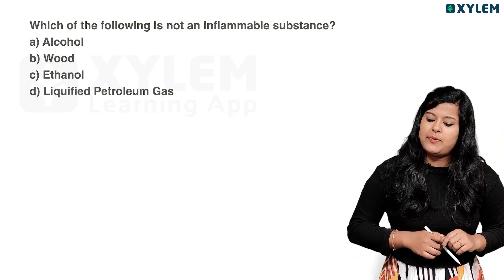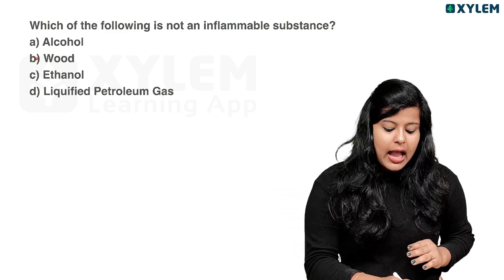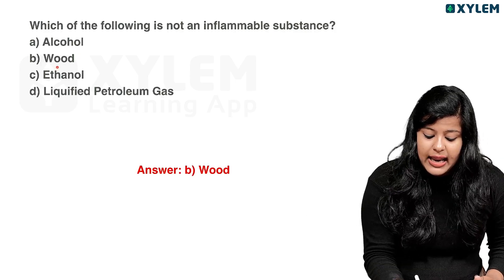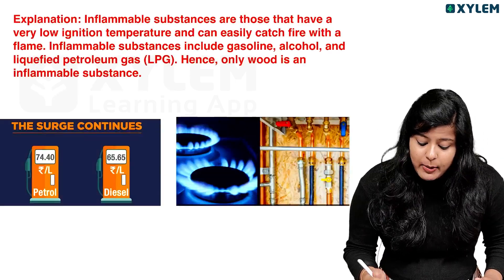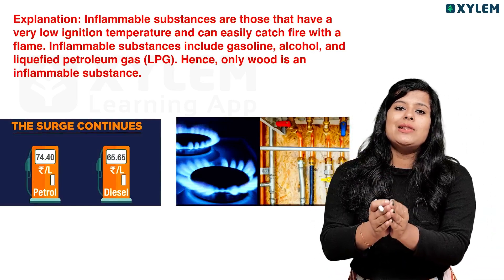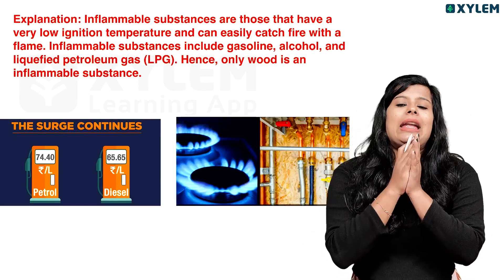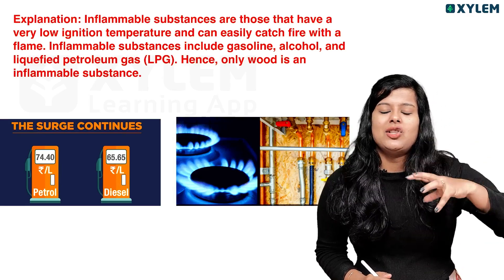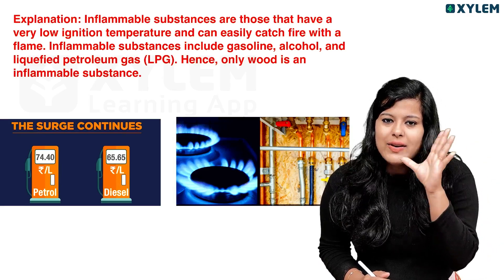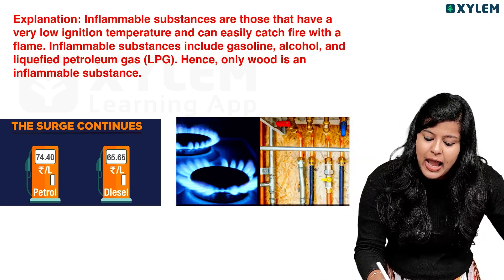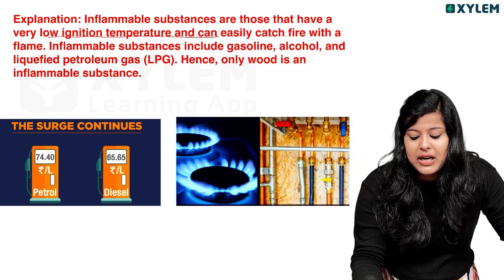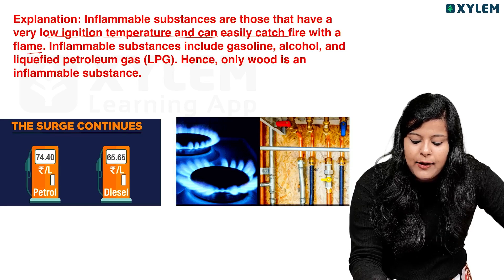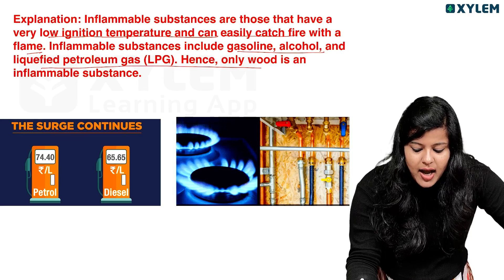Which of the following is NOT an inflammable substance? Alcohol, wood, ethanol, or liquefied petroleum gas? The lowest temperature at which a substance catches fire is called the ignition temperature. Inflammable substances have a very low ignition temperature and easily catch fire with a flame. Inflammable substances include gasoline, alcohol, and liquefied petroleum gas.